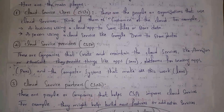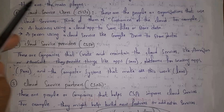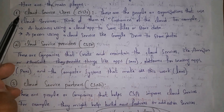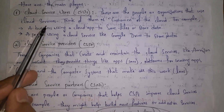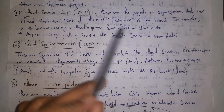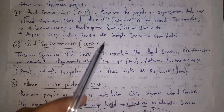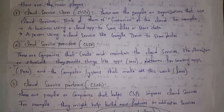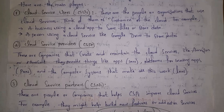There are three main players in the cloud ecosystem. The first is cloud service users, shortly called CSUs. These are people or organizations that use cloud services — think of them as customers of the cloud. For example, a business using a cloud app to save files, or a person using Google Drive to store photos. If I am using Google Cloud to store my files, or a small company is storing its data in the cloud, both are considered cloud service users.